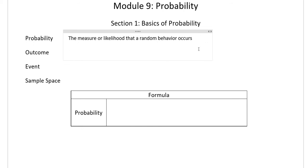In order to find probability we need to talk about a few other terms. First, what we call an outcome. An outcome is the individual result from a probability experiment — each different option that can occur. For example, if you're rolling one six-sided die, the possible outcomes are one, two, three, four, five, and six. If you're drawing cards, the outcomes include the two of hearts, the three of hearts, etc. Finding the probability of just a single outcome is never really interesting because it's always one out of something.